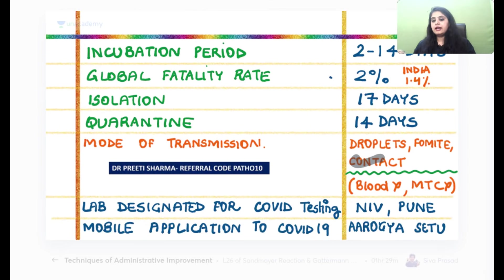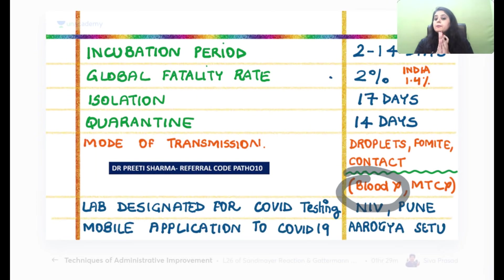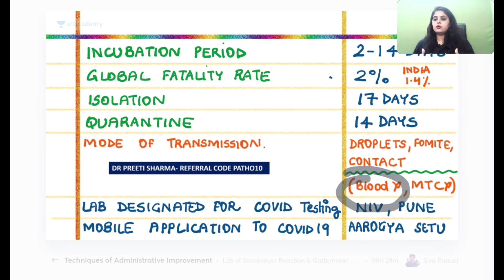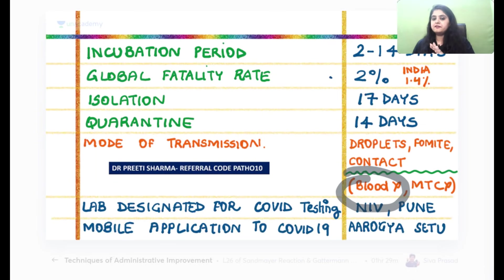To summarize transmission: droplets, fomites, and contact are the main routes. Nothing confirmed via blood or mother-to-child transmission so far. However, if someone is currently COVID-19 positive, they are not allowed to donate blood. After receiving the vaccine, following the second dose, you are not allowed to donate blood for 28 days — that is the government protocol laid down for blood donation post-vaccination.